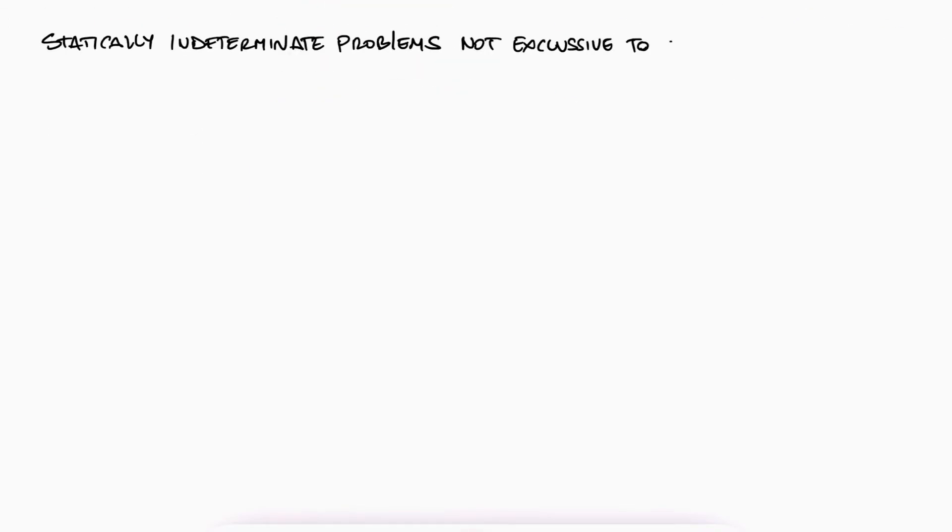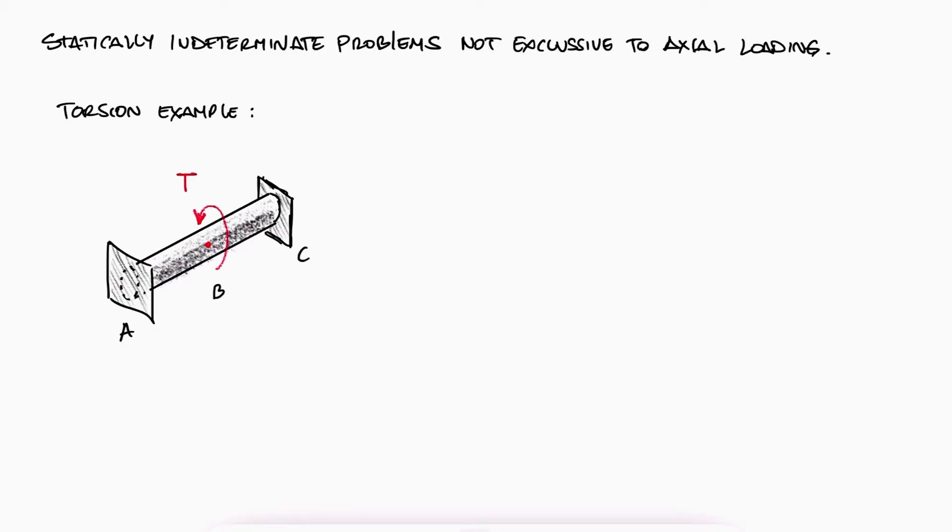An equivalent problem in torsion, to this example, would be to have an external torque applied to a rod within two walls. Statics alone would also give us one equation with two unknowns, and we would have to use the deformation expressions, in that case, the angle of twist, to solve for the reaction torques at the walls.